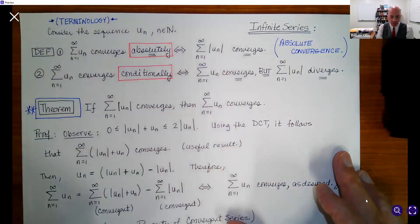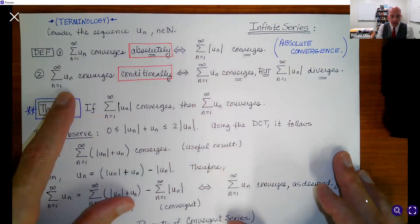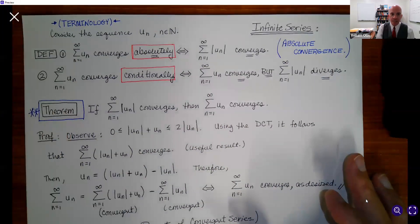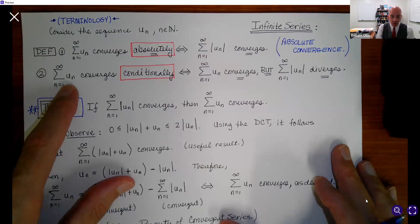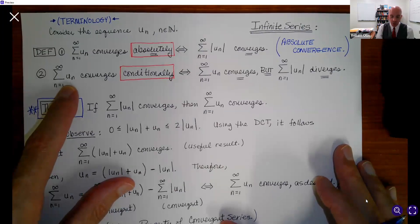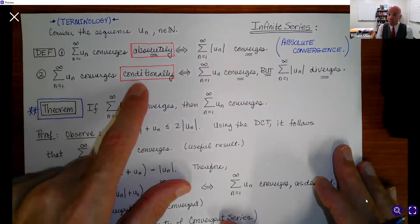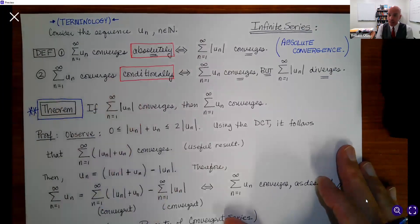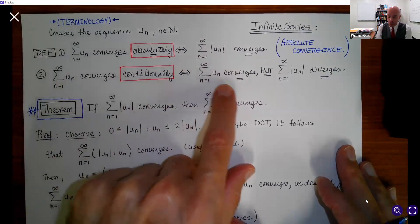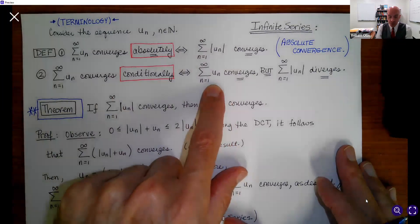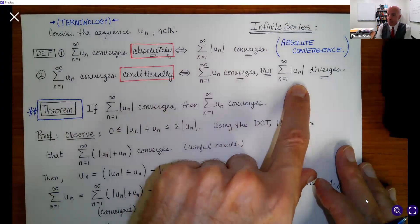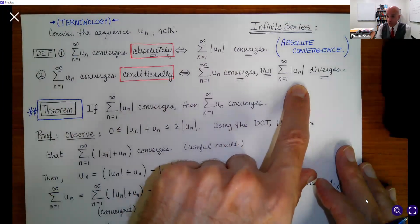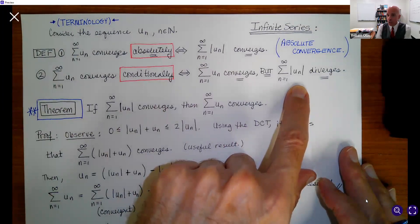What we want to do now is combine all of that into one sequence and call it u sub n, just to make the definitions a little bit easier to work with. We will say that a particular infinite series converges absolutely when the infinite series of absolute values of the sequential terms converges. That is what we call absolute convergence — a very simple definition.